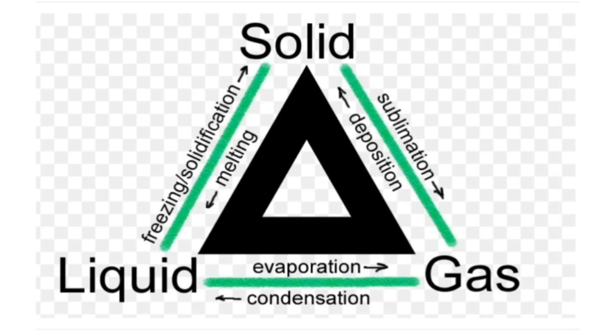Now we will study about the change of state of matter with the effect of heat. We have three different states: solids, liquids and gases. How do they change among themselves due to the effect of heat? Like the solid changing into liquid, liquid changing into gas, gas changing into solid — how do they change and what do we call that process is what we will be learning in this lesson.